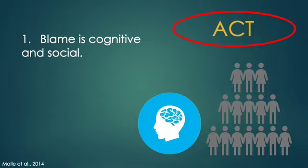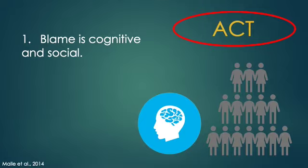A prominent account about act-based moral judgment is from Bertram Malley and colleagues. They put forth a model of how we ascribe blame that relies on four principles. First, blame is cognitive and social — it's private on one level, a series of calculations we're not tuned into, but also social and therefore public, part of our public lives.